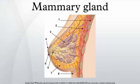A mammary gland is an organ in female mammals that produces milk to feed young offspring. Mammals get their name from the word mammary. In humans, the mammary glands are situated in the breasts.